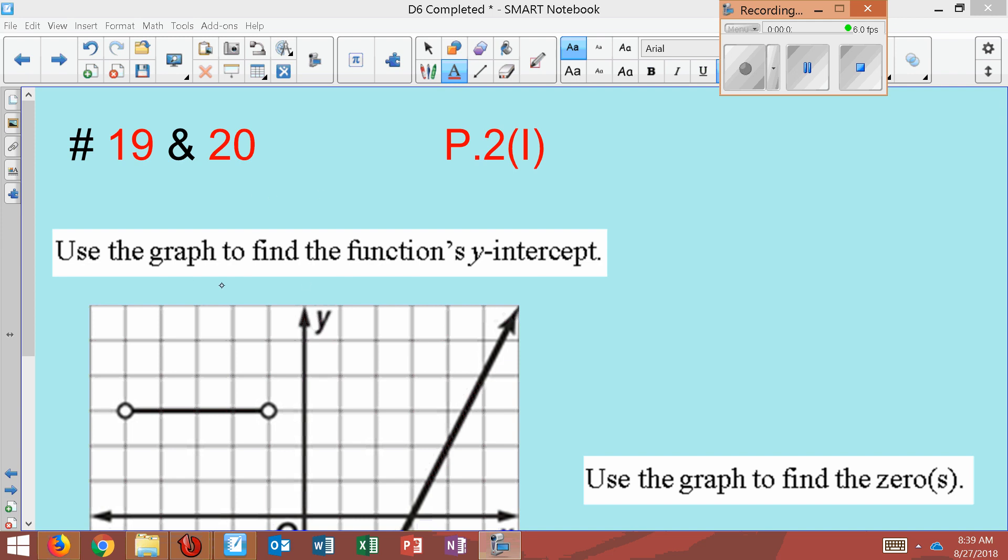Number 19 and 20. Use the graph to find the function's y-intercept, and then number 20 is use the graph to find the zeros.